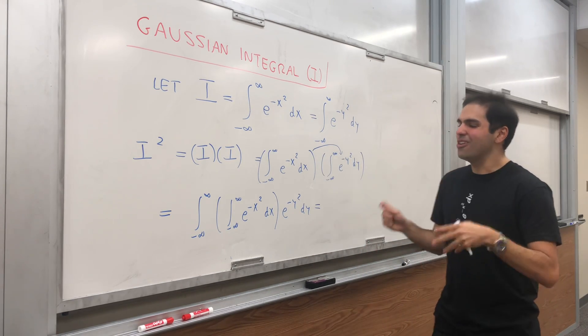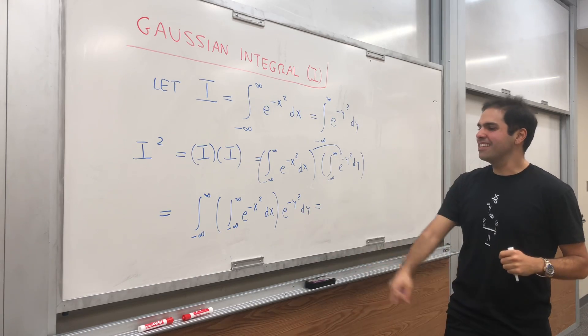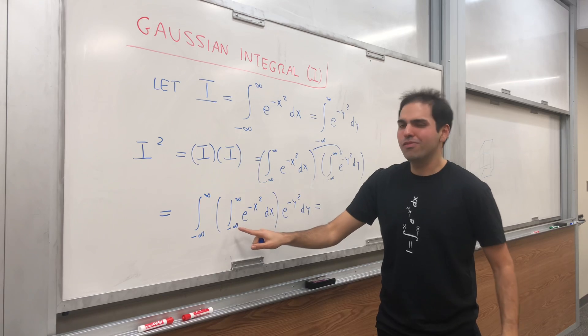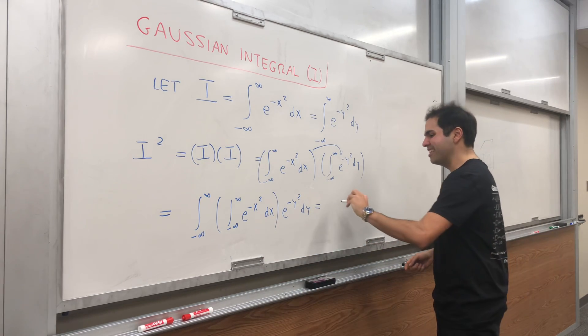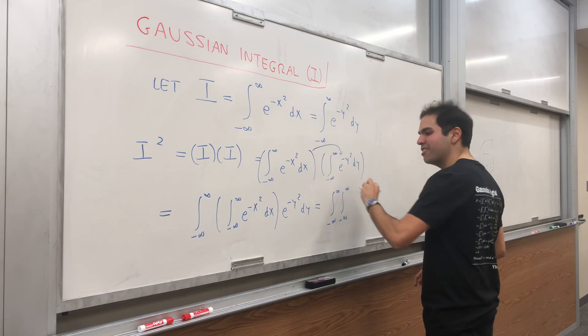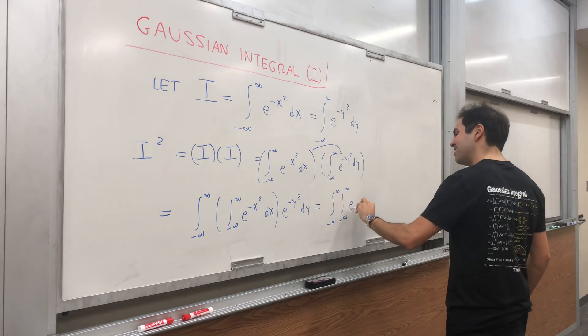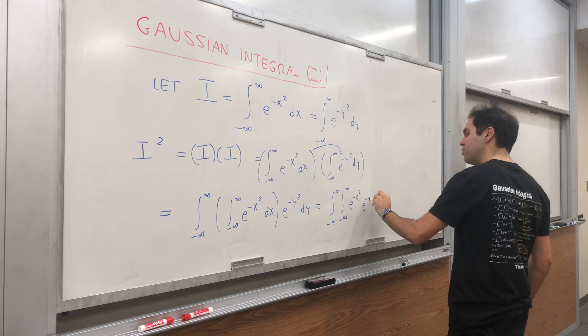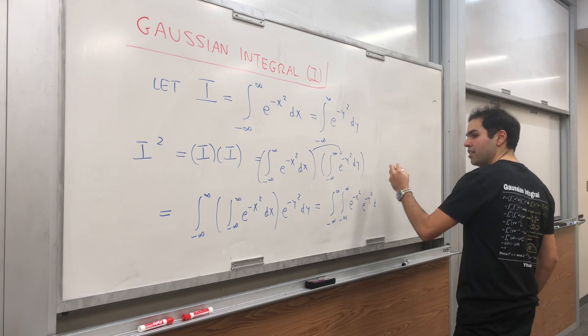Then there's this beautiful theorem called Fubini's theorem that says the integral of an integral is just a double integral. I know it looks silly, but it's a very deep theorem, I promise you. So this equals the integral e^(-x²)e^(-y²) dx dy.